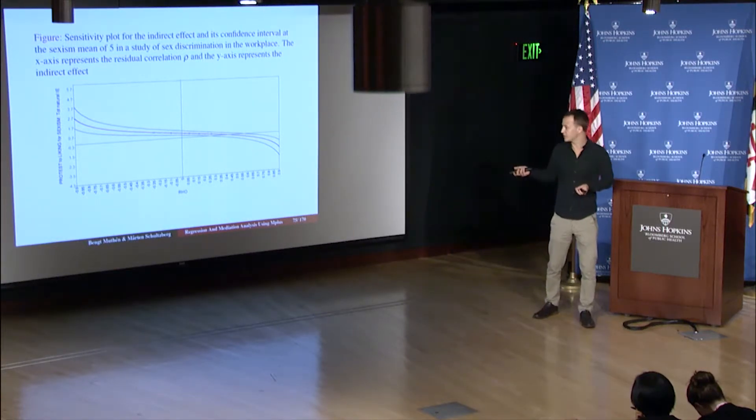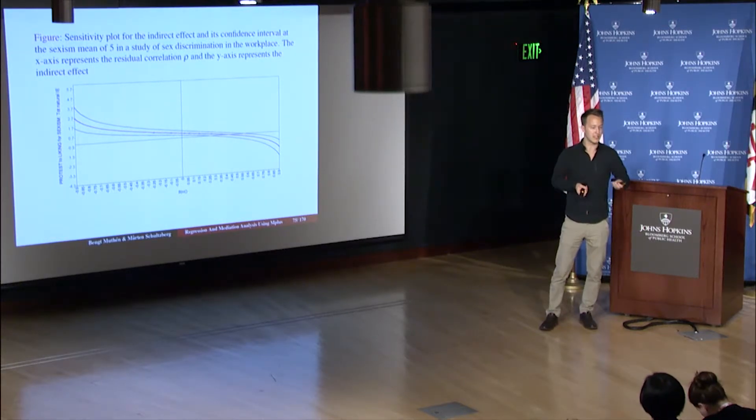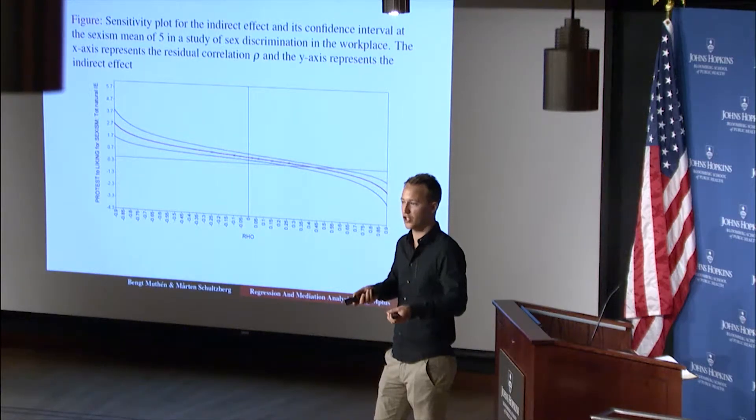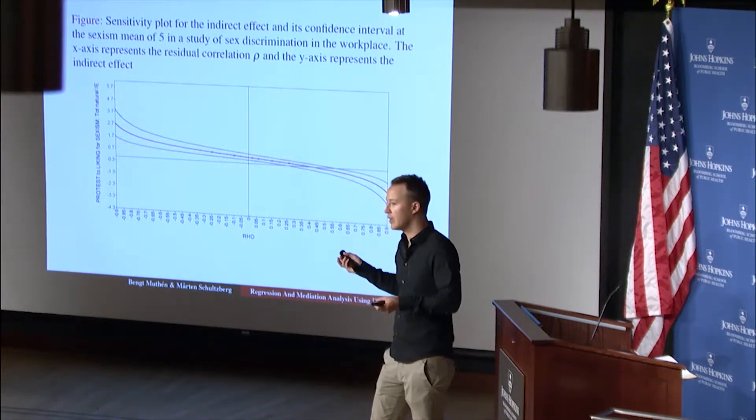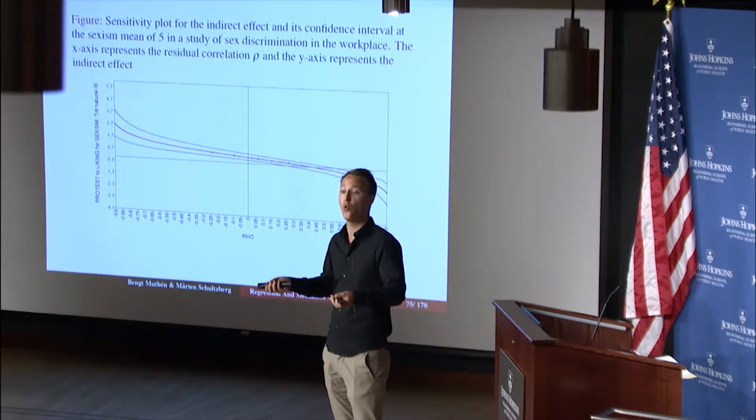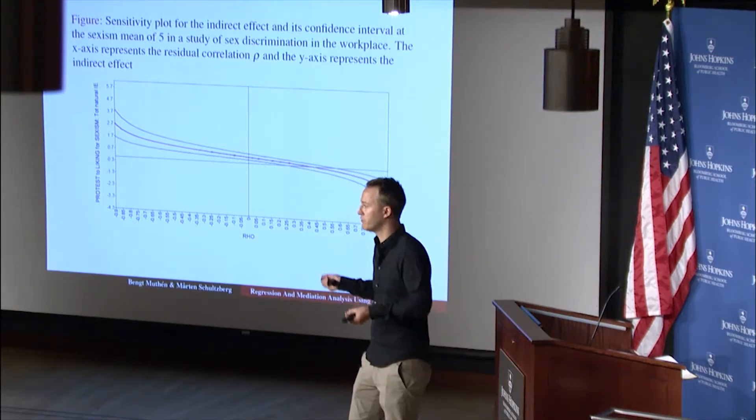So this tells us that the assumption that we've made is actually very sensitive. Therefore, it's a sensitivity analysis. It's sensitive to violations. If we have some correlation that is larger than 0.25, then the results that we see in the model does not hold any longer. So that tells me that this is a very sensitive model to this assumption.